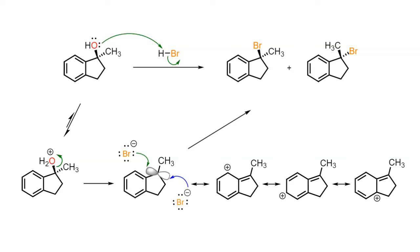The planar nature of the cation allows for nucleophilic attack from either face, thereby resulting in a racemic mixture of benzylic halides.